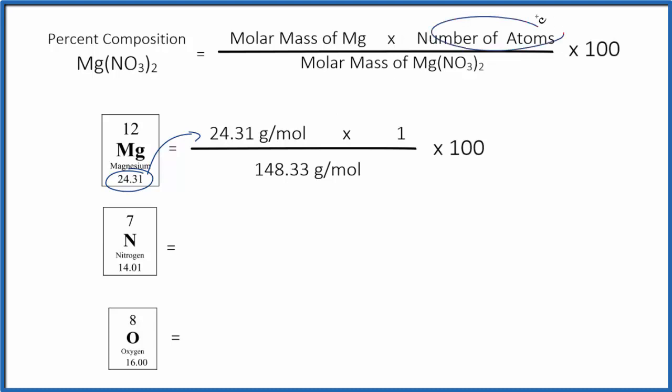And we multiply that by the number of atoms. We only have one magnesium atom, so we have our one here. We multiply these numbers, and then we divide by the molar mass for the compound. For magnesium nitrate, that's 148.33, and if you need help calculating this number, there's a link at the end of the video.